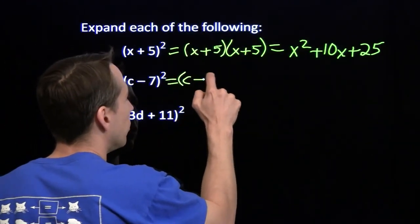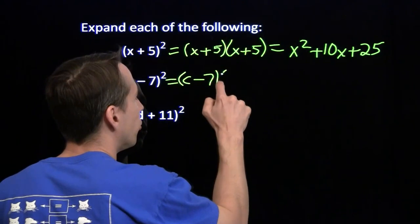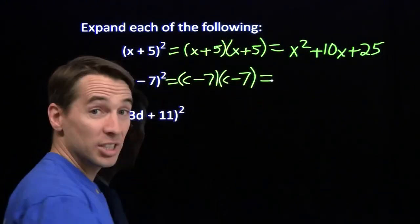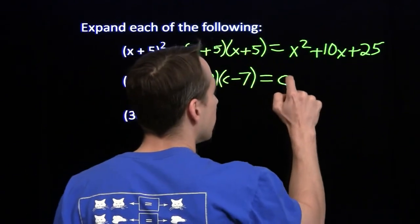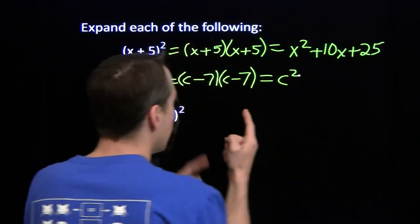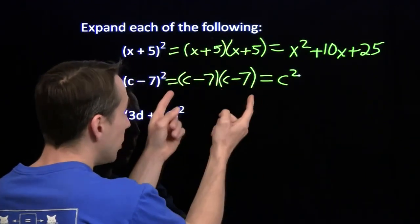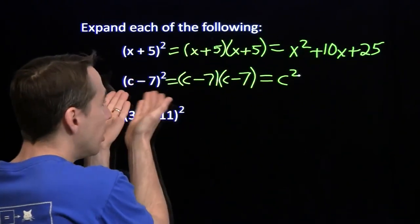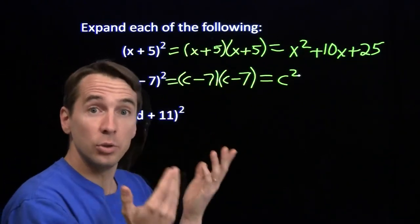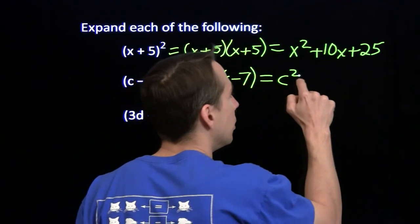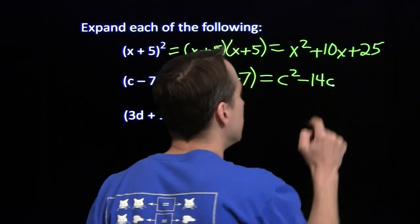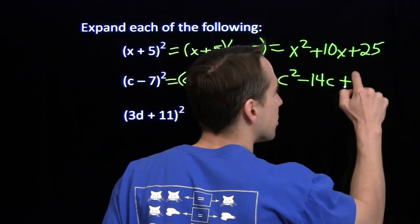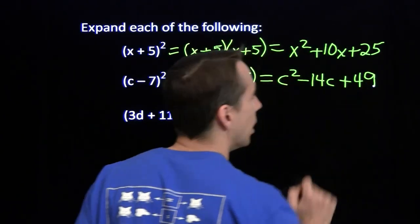Next problem. We'll write this as the product of two binomials: c minus 7 times c minus 7. C times c is c squared. Minus 7 times c, and c times minus 7 — that gives us two copies of minus 7c, which gives us minus 14c. Then minus 7 times minus 7 gives us plus 49.